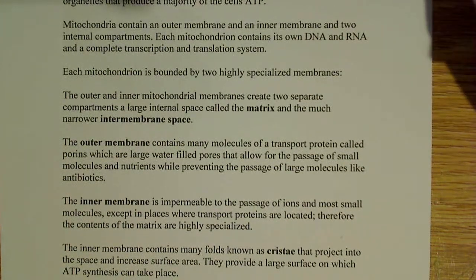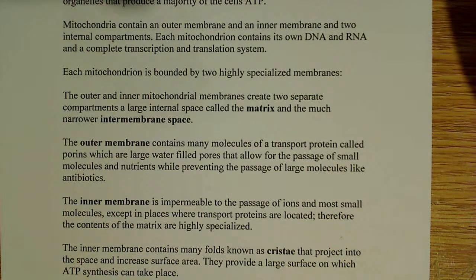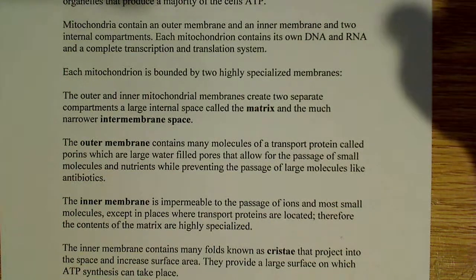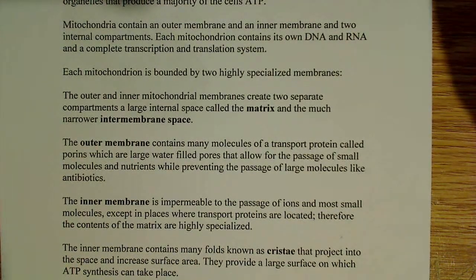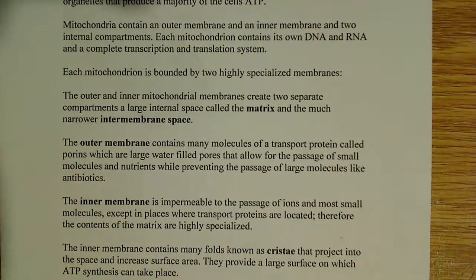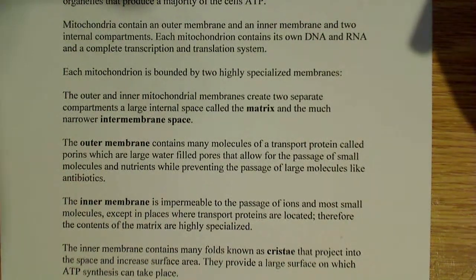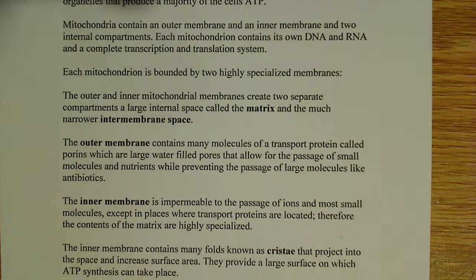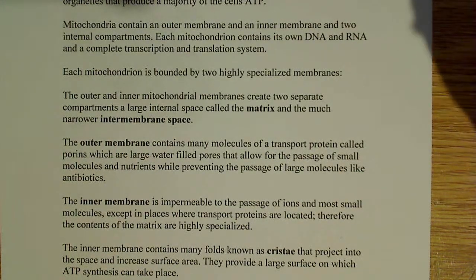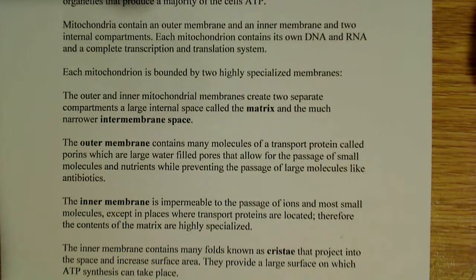The outer membrane contains many molecules of a transport protein called porin. These porins are large water-filled pores that allow for the passage of small molecules — generally molecules 5,000 Daltons or less — and also nutrients, while preventing the passage of much larger molecules, such as antibiotics. So it prevents the passage of large molecules while allowing small molecules and nutrients to pass through.